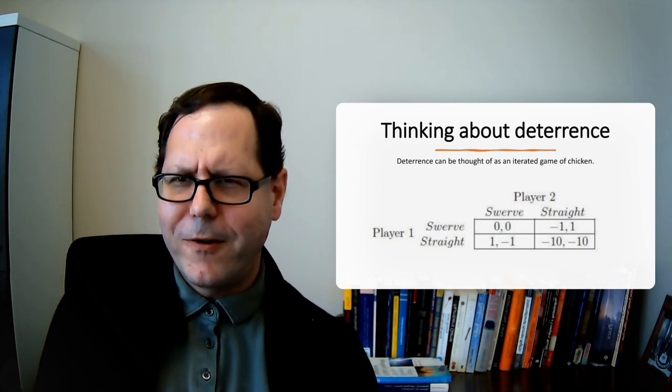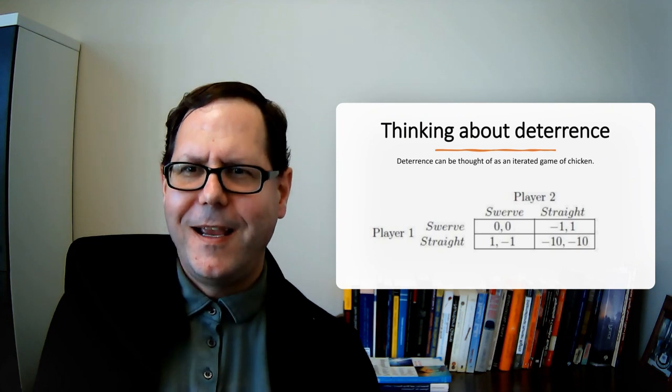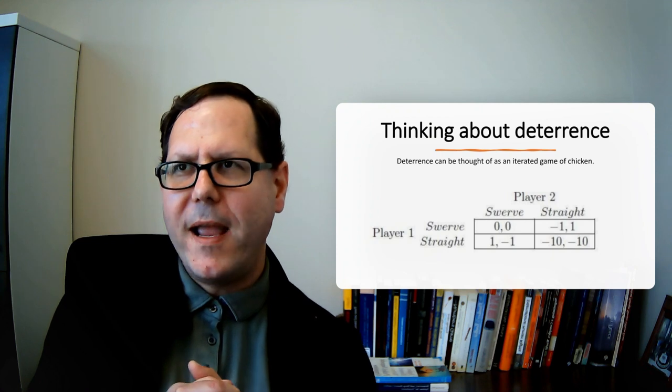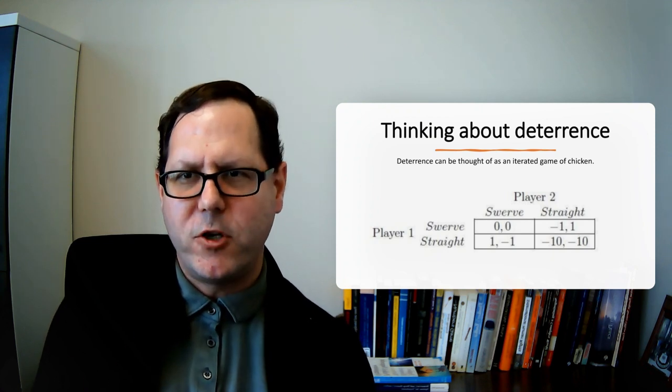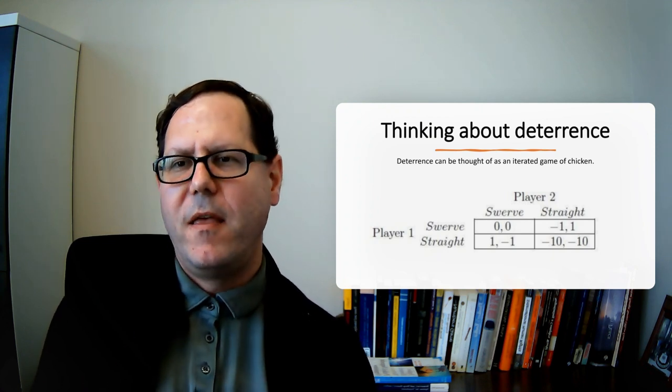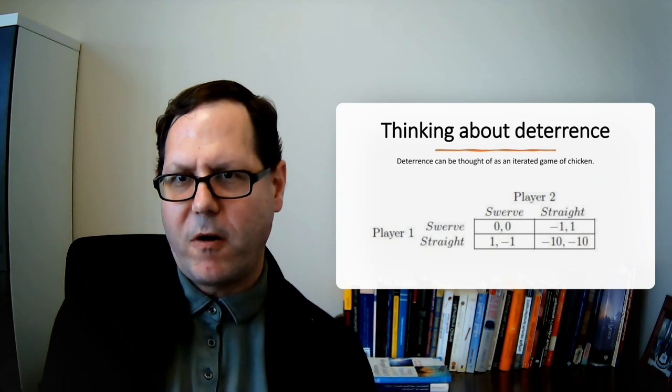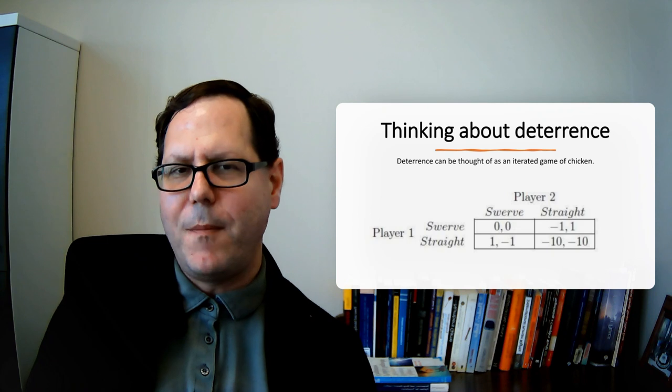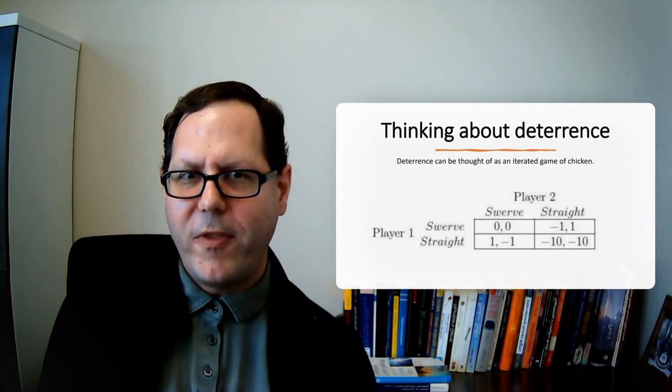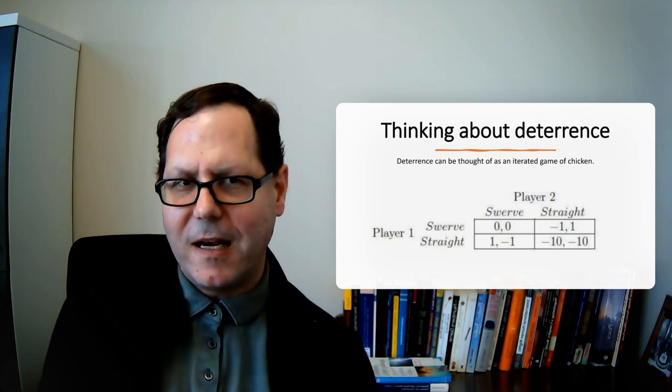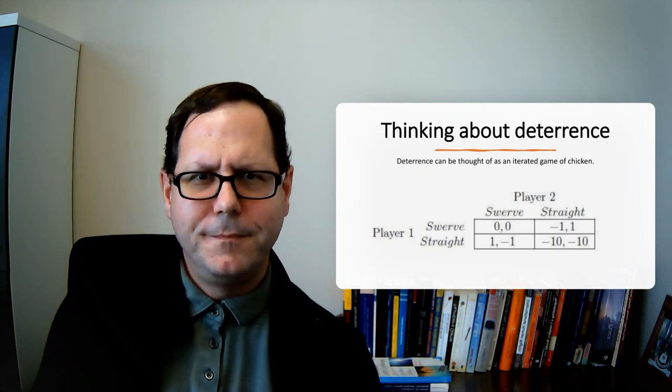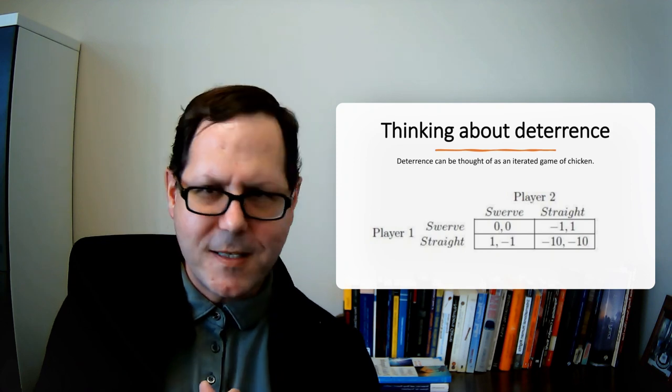What bargaining theory of war suggests is that states might opt for war as a way of establishing reputations for being the kind of states that will occasionally use military force, that will occasionally wage war, so that others don't press them and don't make demands, and so they're less likely to be taken advantage of by other states that are trying to press their claims at your expense.